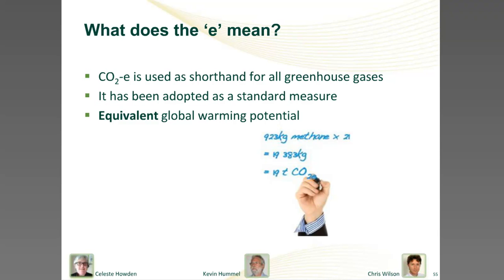So what does the 'E' mean? Well, the 'E' is significant because CO2 is not the only greenhouse gas. Various greenhouse gases have different characteristics, such as their capacity to trap heat. For example, methane has a global warming potential of 25, and nitrous oxide has a global warming potential of 298. So a tonne of methane in the air has the same global warming potential as 25 tonnes of CO2, and a tonne of nitrous oxide the same as 298 tonnes of CO2.